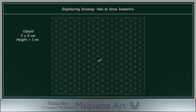I will start by drawing a rectangle of dimensions 2 by 5 cm, then add the height using the vertical lines of the z-axis. Also notice that this cuboid can be drawn in a different position like this.